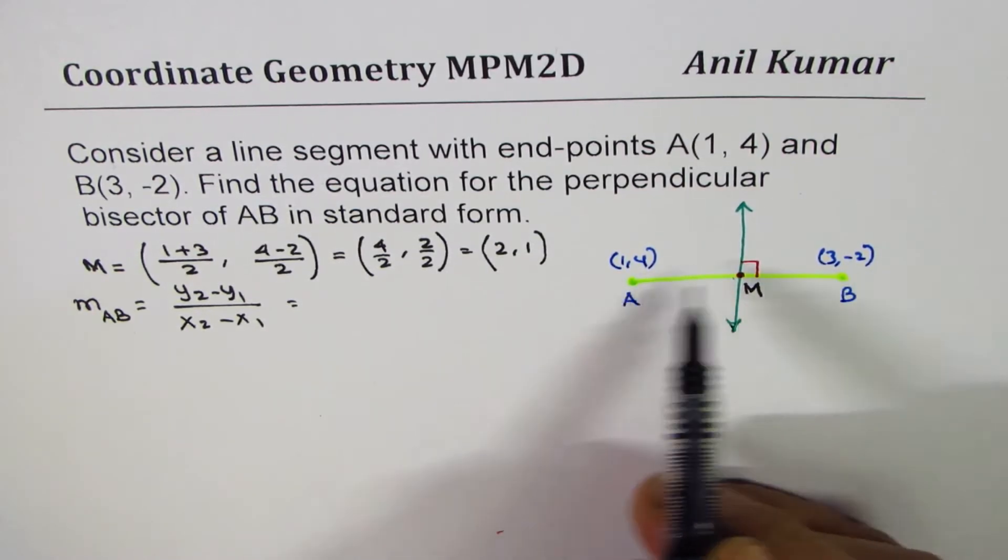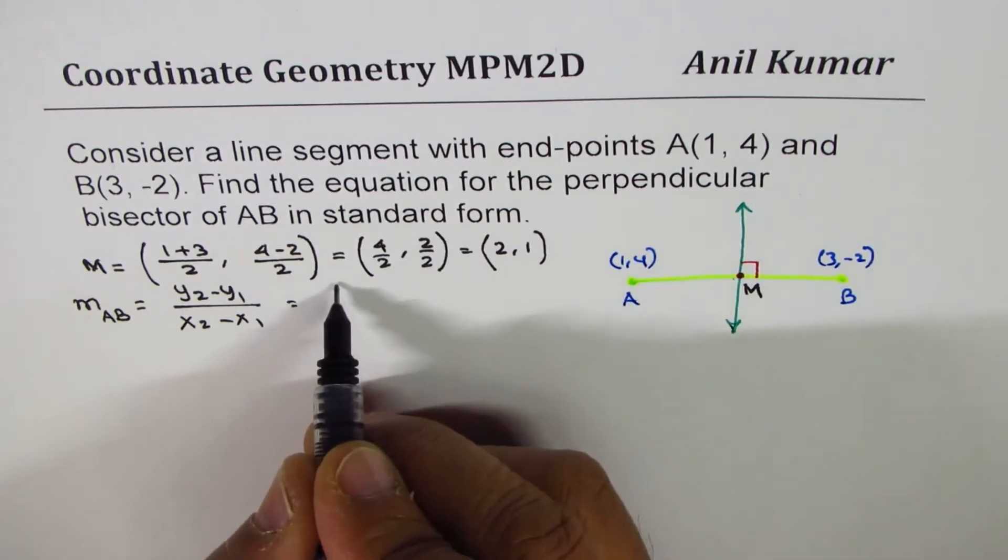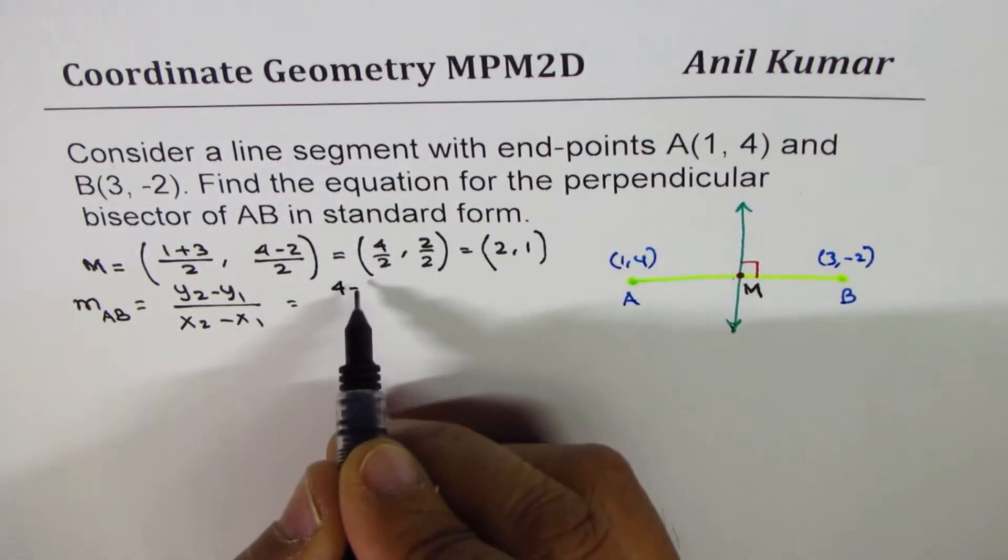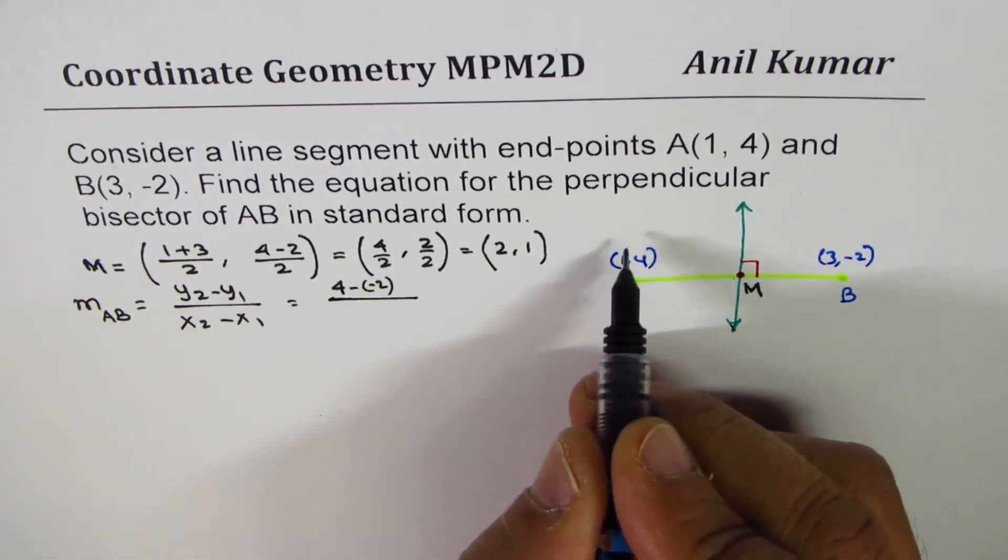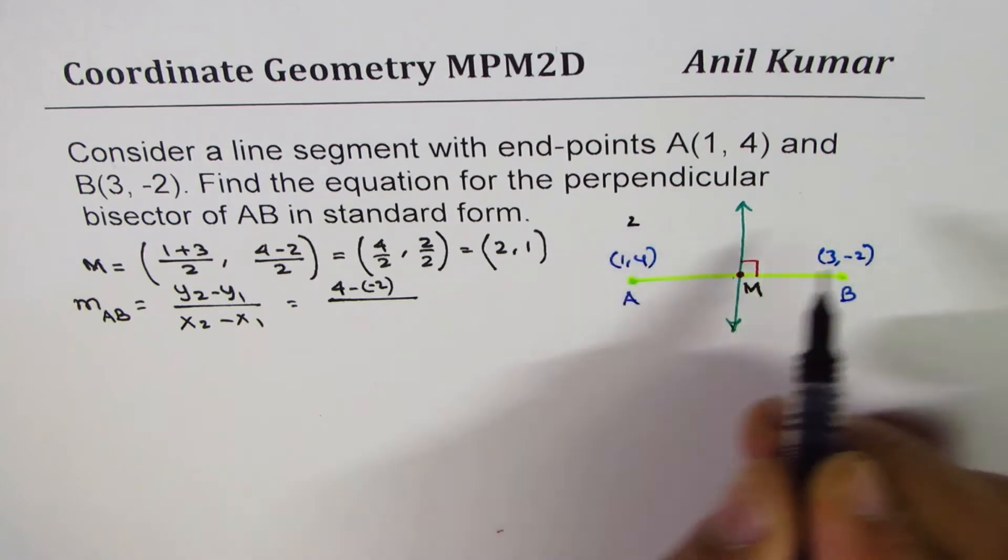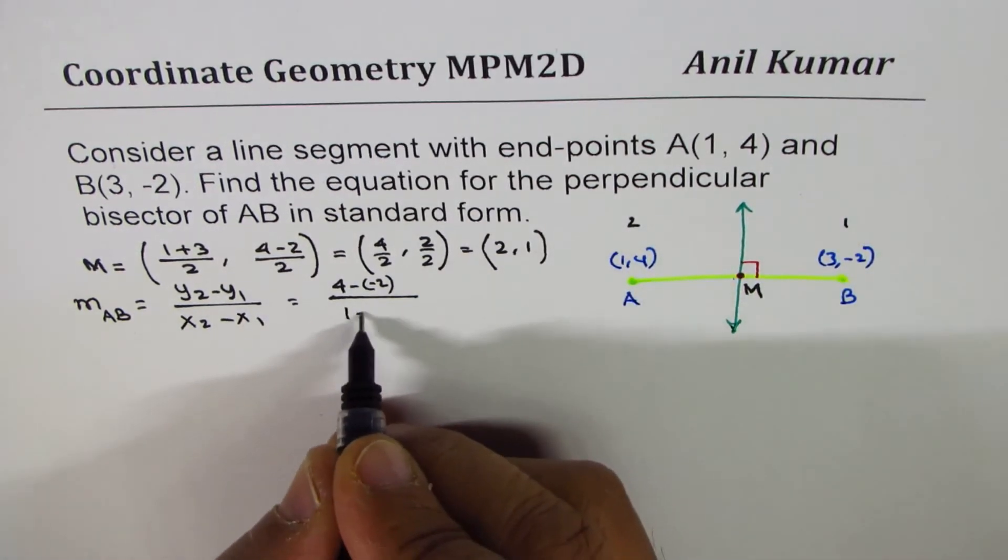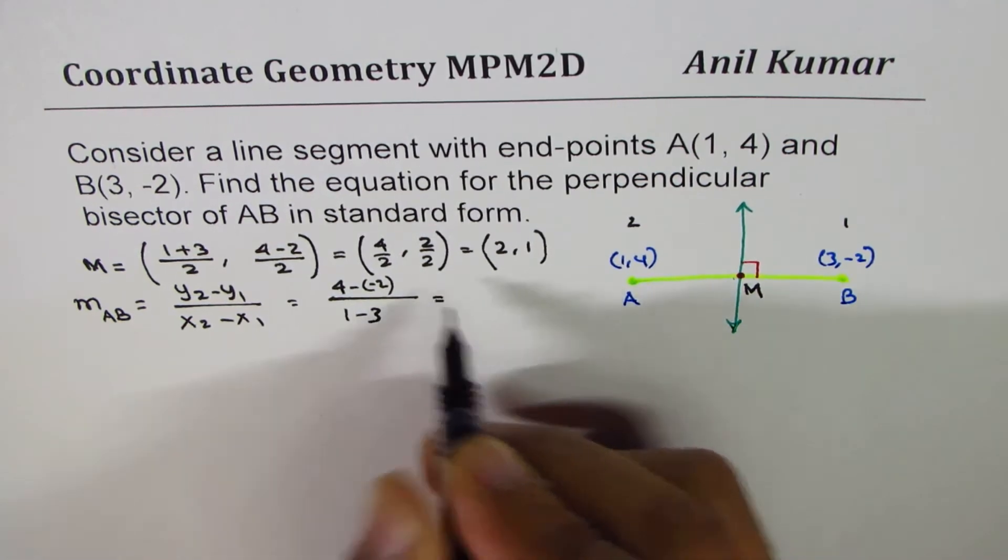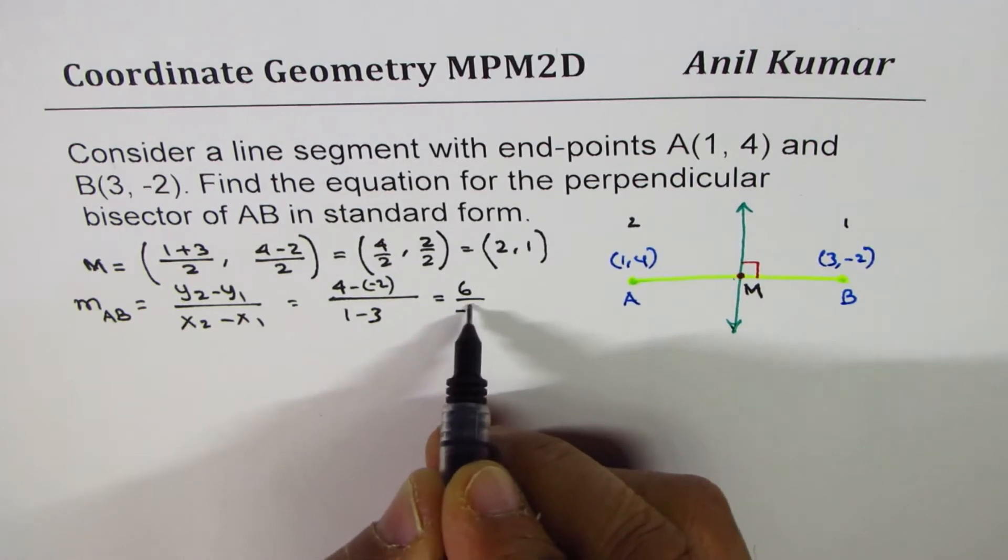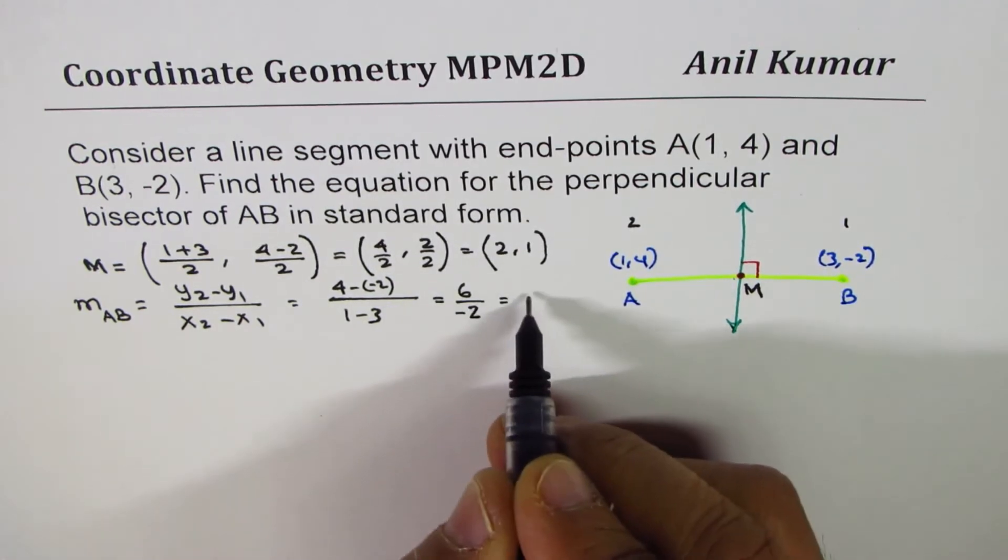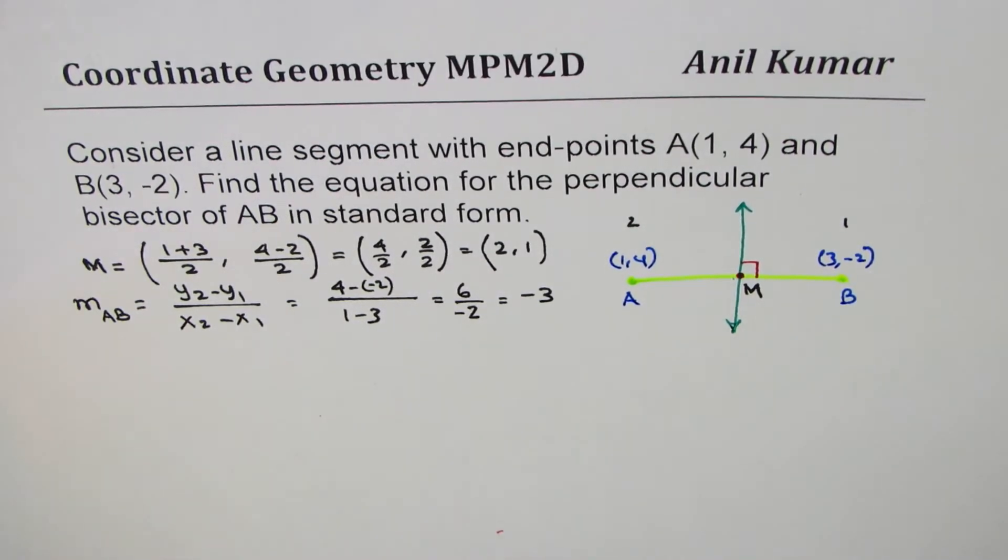I prefer to write 4 now here in this case. 4 minus minus 2. So, that is y2. I am taking this as coordinate 2, this as 1. And x is 1 minus 3. Let's say 1 minus 3. And that gives me 4 plus 2, which is 6, and that is minus 2. So, what we get here is minus 3 as the slope of our line.